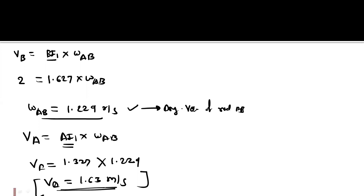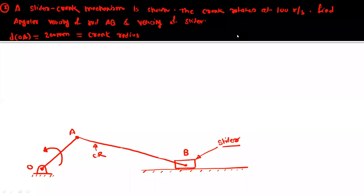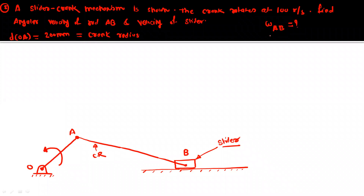Now find the linear velocity of point A using: VA = AI1 × Omega_AB = 1.327 × 1.229 = 1.63 meters per second. This is how you find the linear velocity and angular velocity for a mechanism having general plane motion. The next problem is a slider-crank mechanism where the crank rotates at 100 rad/s. We need to find the angular velocity of rod AB and the velocity of the slider.